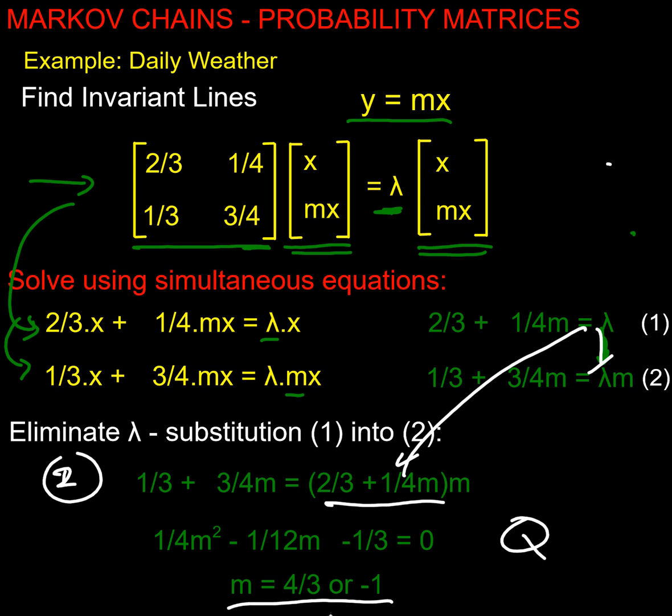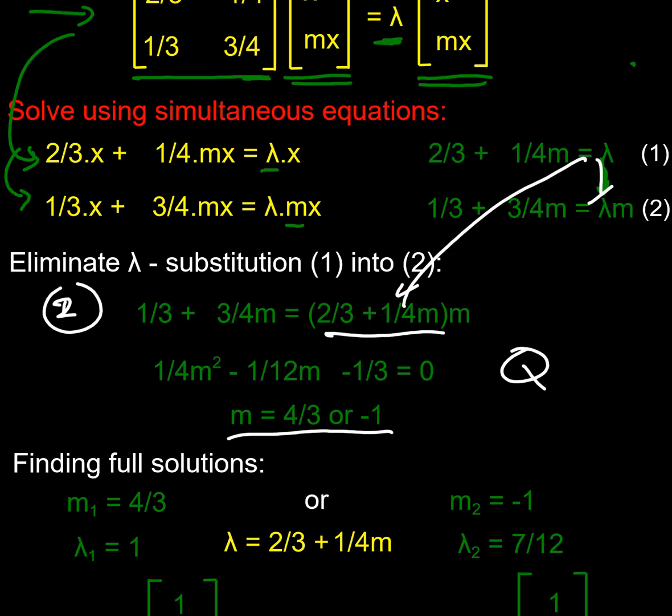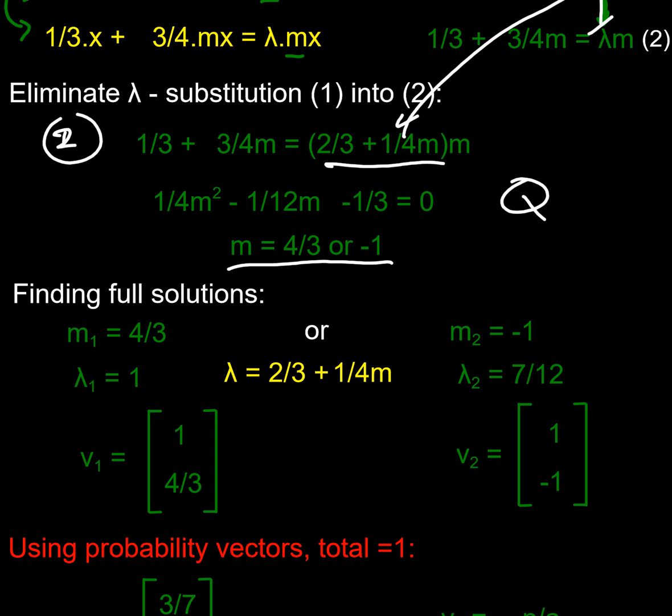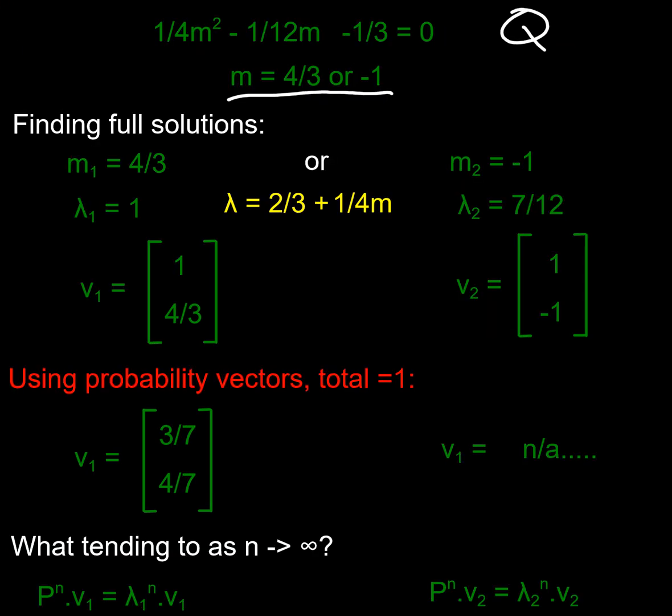That's equation one with equation two with equation one substituted in. What do I get? Miraculously, I get a quadratic and I get these two solutions. So what's happening now? Let's work out the full solutions and see what we get. So if m equals four thirds, I'm going to call it m1. Using my formula connecting lambda and m, I find that lambda one is one. And if I use m2, which is minus one, I find that lambda two is seven twelfths. And if I write those just as vectors, like we did before for invariant line vectors, I'd get one and four thirds, and one and negative one.